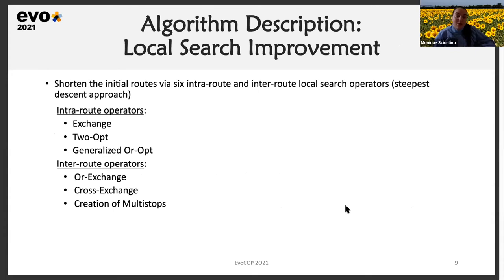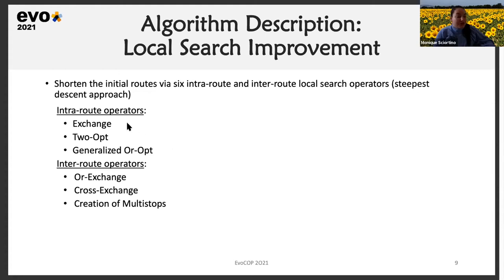Having obtained an initial solution, we move on to the local search routine, using improvement heuristics to improve the initial solution. We try to shorten the initial routes via six different intra-route and inter-route local search operators. At each iteration of this local search routine, we use the steepest descent approach: we evaluate all possible operations within the union of these six operators and perform the one that yields the highest improvement.